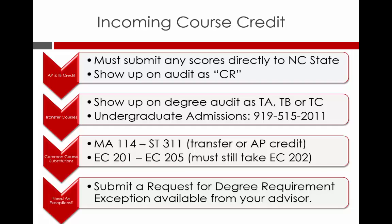If you have received AP or IB credit, please make sure you have those scores sent to NC State's Undergraduate Admissions just as you would transcripts from other schools. Credit for these courses will show up on your Degree Audit as CR where the grade would post. When you see credits that show up as TA, TB, or TC, these are transfer credits that you have received grades of A, B, or C respectively.